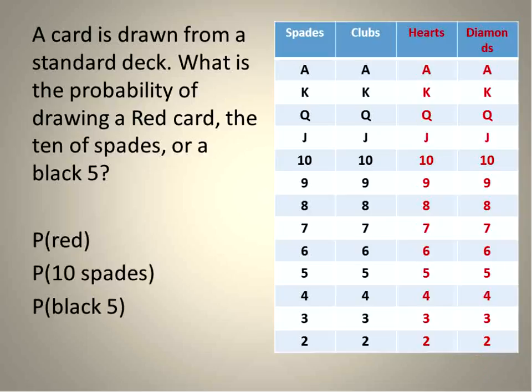The probability of getting a red. Red includes all the hearts and all the diamonds. There are a total of 26 diamonds and hearts, red cards. So 26 out of 52. Notice I'm leaving that the way it is. I don't reduce it down to one-half because that will make adding the fractions harder later on. Keep the denominator the same.